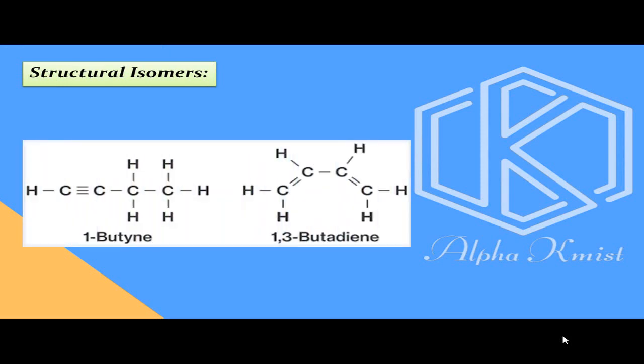Structural isomers کی مثال میں 1-butyne اور 1,3-butadiene دیے گئے ہیں۔ 1-butyne میں carbon-carbon triple bond ہے، اس میں 4 carbon atoms اور 6 hydrogen atoms ہیں۔ اسی طرح 1,3-butadiene میں position 1 اور 3 پر double bonds ہیں اور اس میں بھی 4 carbon atoms اور 6 hydrogen atoms ہیں — پس یہ دونوں structural isomers ہیں۔